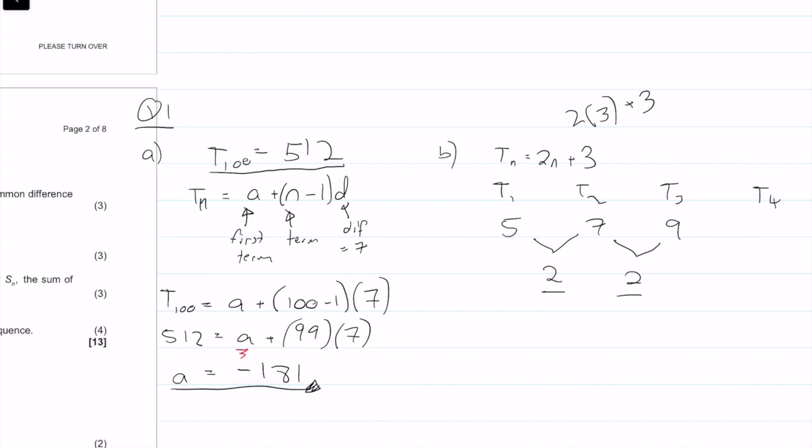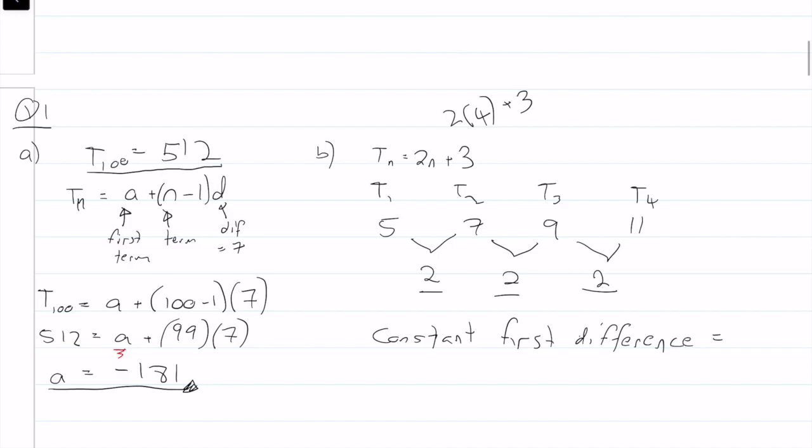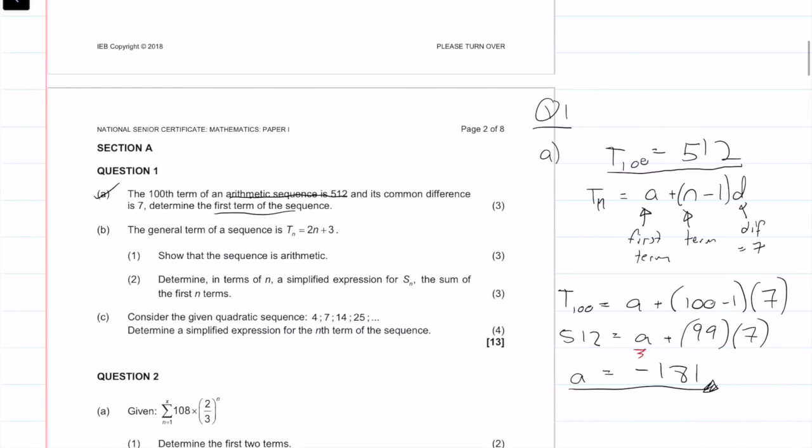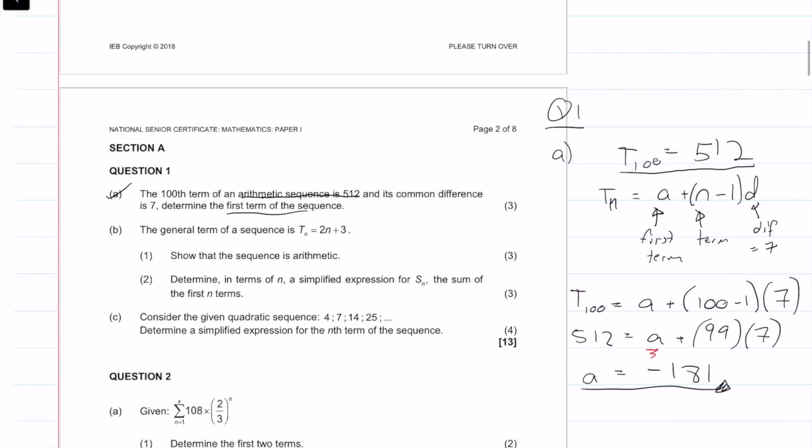So my common difference is 2. If we took T4, let's just do it for fun. If we put in a 4 there, that's 8 plus 3 is 11. So 11 minus 9 is 2. So we can say we have a constant first difference, which is equal to 2. Therefore, it is arithmetic, and we get ourselves three marks.